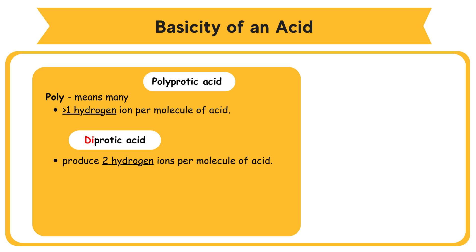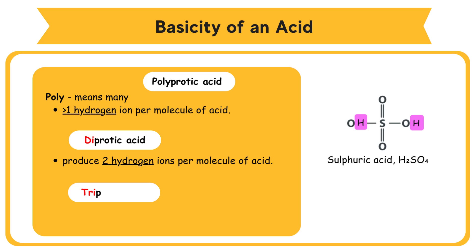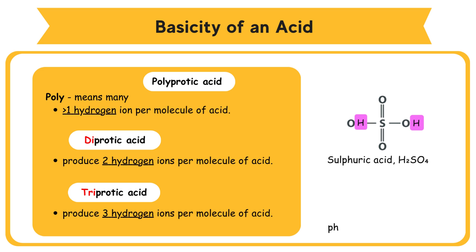Example of diprotic acid: sulfuric acid, H2SO4. Triprotic acid can produce three hydrogen ions per molecule of acid. Example: phosphoric acid, H3PO4.